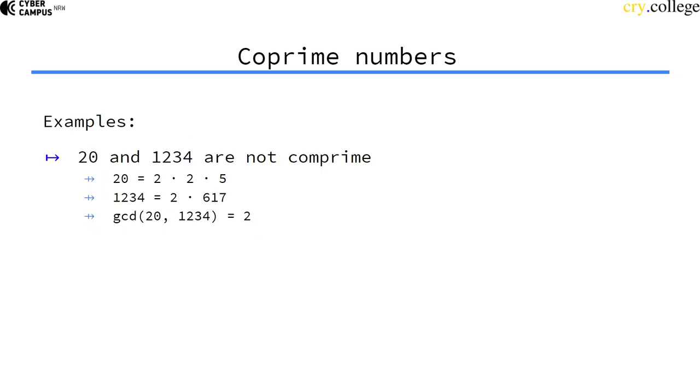Let's look at an example: 20 and 1234 are not co-prime because both have the prime factor 2, which is also the greatest common divisor here.